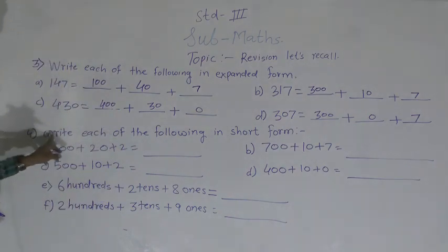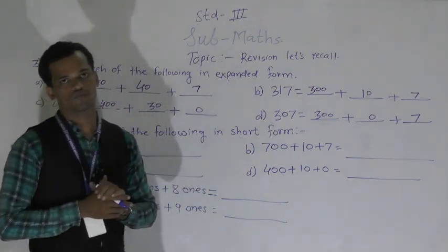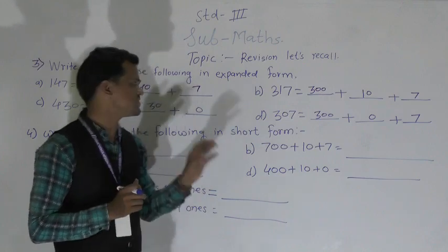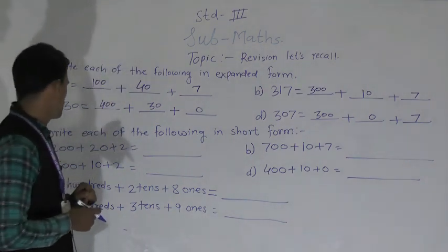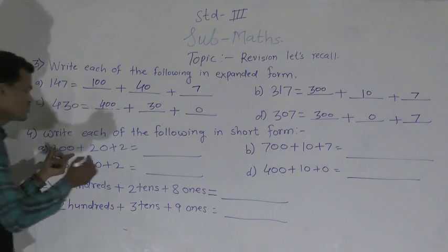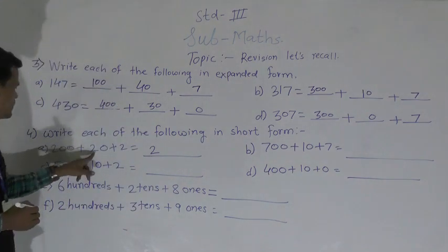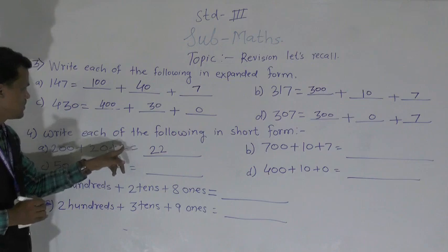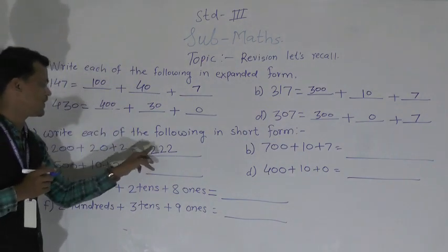Next question number four: write each of the following in short form. So the number is given in expanded form and we have to write that number into short form — exactly the opposite concept. So here: 200 + 20 + 2. 200 means write 2 at the hundreds place, 20 means write 2 at the tens place, and the single digit 2 write at the ones place. So this number is 222.